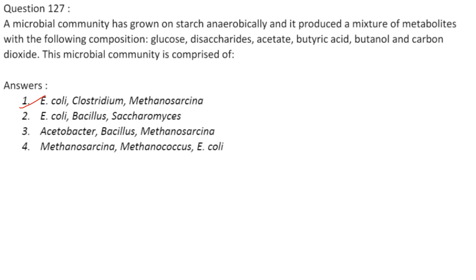A microbial community grown on starch anaerobically produced glucose, disaccharides, acetate, butyric acid, butanol, and carbon dioxide. E. coli produces acetate, formate, and ethanol under anaerobic conditions. Clostridium species produce butyric acid. Methanosarcina converts acetate to carbon dioxide and methane. Therefore the microbial community is E. coli, Clostridium, and Methanosarcina. Answer is option 5.